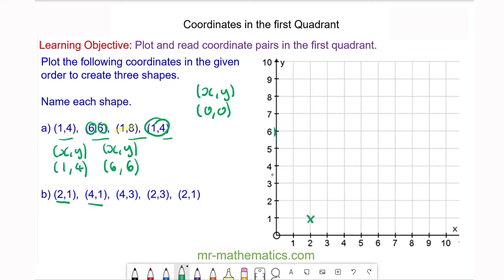(4,1), which is x is 4 and y is 1, which goes here. (4,3), so x is still 4 and y is 3, so this coordinate goes here.